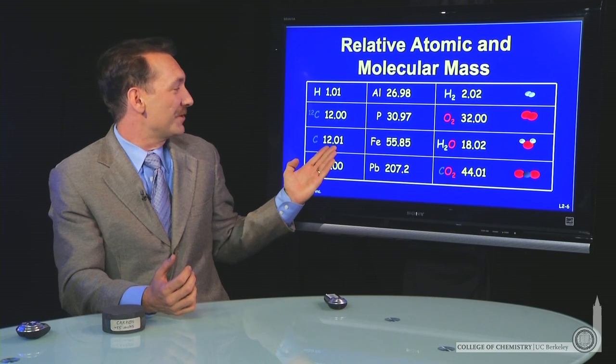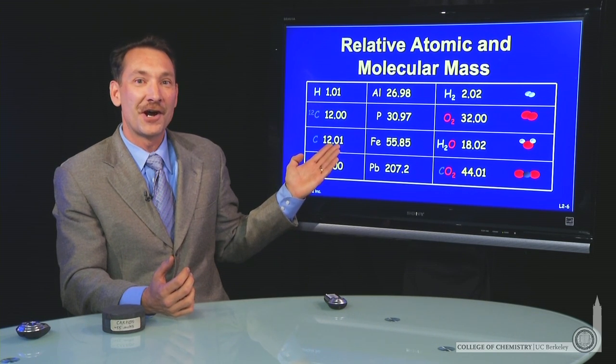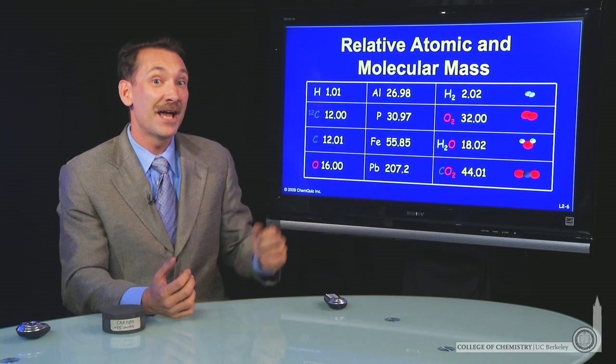For instance, here's two entries, carbon-12 and naturally occurring carbon. They have different relative masses.